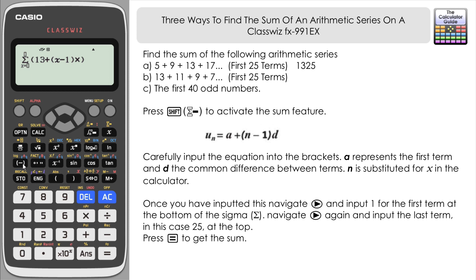The common difference d: each term is 2 less than the previous, so the difference is -2. Multiply by -2. Navigate right and input 1 for the first term, then navigate to input 25 for the upper limit. Press equals, and we get the sum of the first 25 terms: -275.